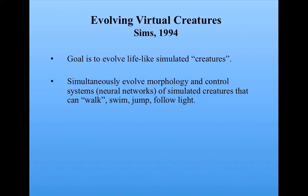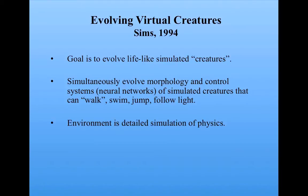This was a particularly complicated application of the genetic algorithm, because what Simms did was write an algorithm to simultaneously evolve both the morphology — that is, the shape of the creatures — and their control systems, that is, their artificial brains or their neural networks. The environment is a very detailed simulation of physics.